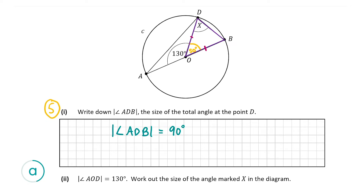In an isosceles triangle, the two angles at the base are equal — that's where x is and the corresponding angle on the other side. So whatever x is, it's also equal to that other angle, which I'm also marking as x. They will be the same because it's an isosceles triangle — two sides the same means the two base angles are also the same.